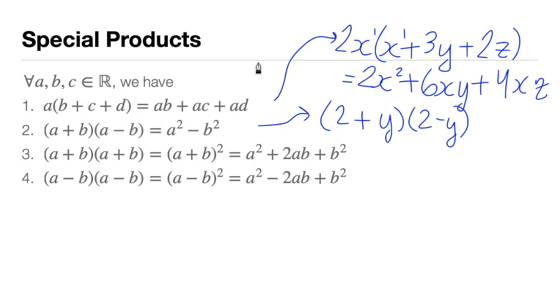Last condition: they must have different operations, a plus and a minus. This equals the first term squared minus the second term squared. So 2 squared is 4, minus y squared: 4 - y². The reverse is called the difference of two squares.